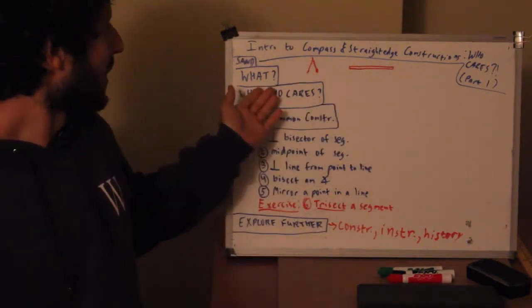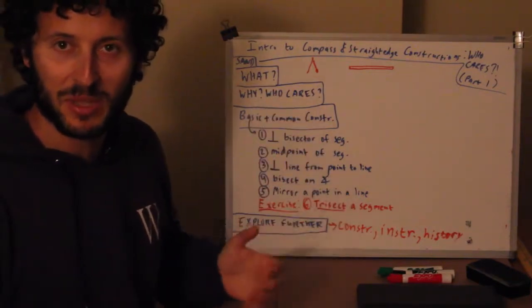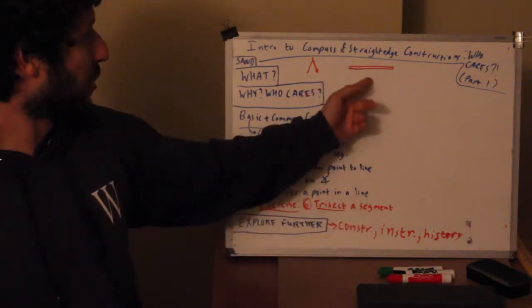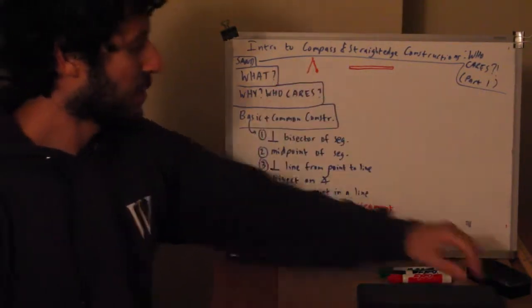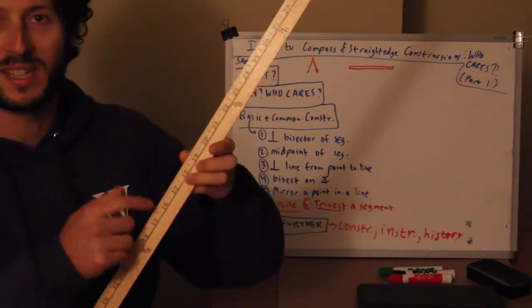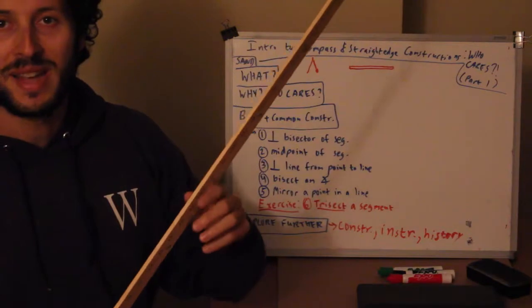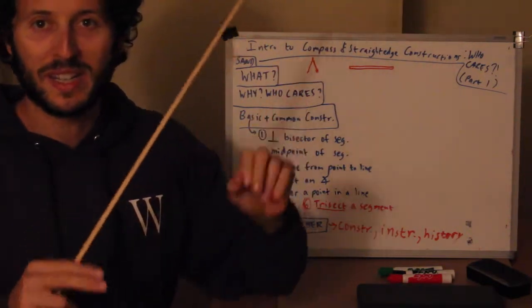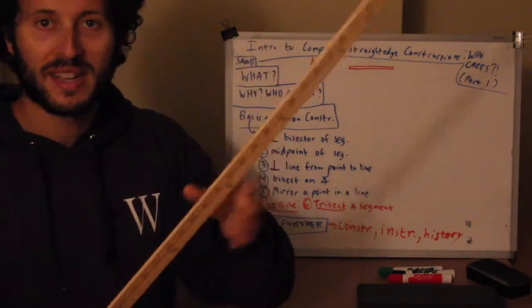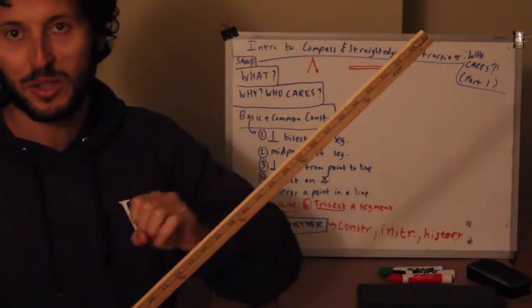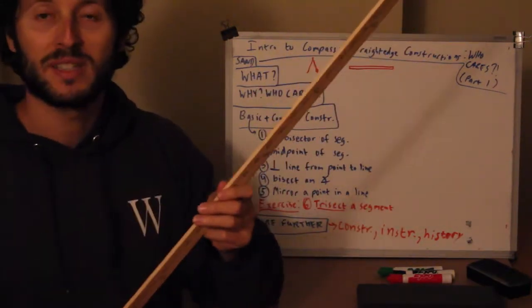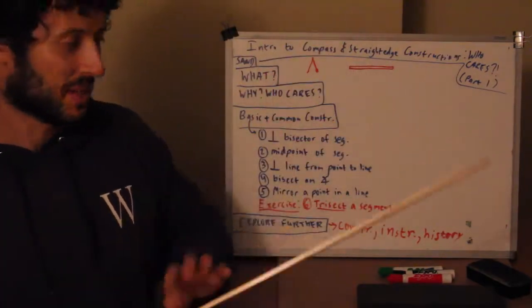So first of all, what are straight edge and compass constructions? Very simple - they involve two instruments: a straight edge and a compass. A straight edge is something like a ruler except a ruler has markings on it to indicate distance. The actual historical Greek straight edge is literally just a straight edge with no markings, and it can be of any length. It's used to connect points and extend segments for various things.